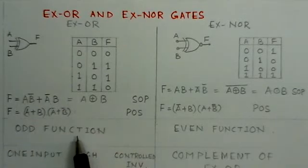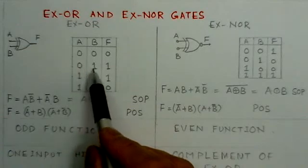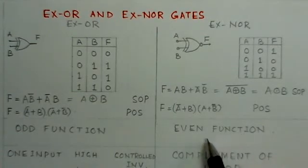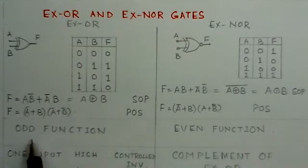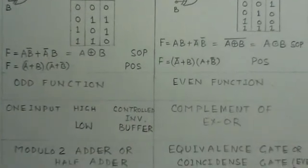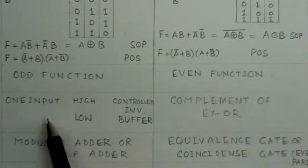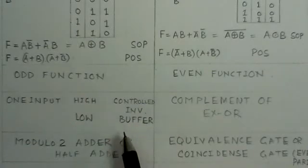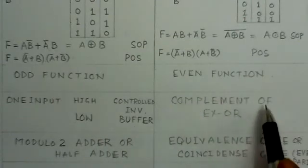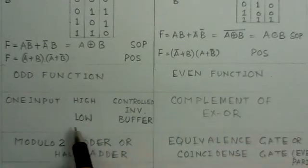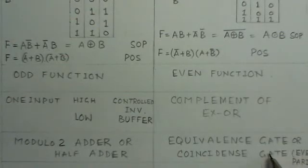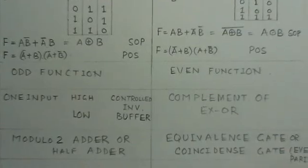Another very important property: XOR is called an odd function, because when the number of 1-inputs is odd you get output 1. XNOR is called an even function, because when the number of 1-inputs is even you get output 1. For XOR, if one input is high it acts as a control inverter; if it is low it acts as a buffer. The XNOR function is just the complement of XOR. The XOR gate is also called a modulo-2 adder or half adder, while the XNOR gate is called the equivalence gate or coincidence gate.